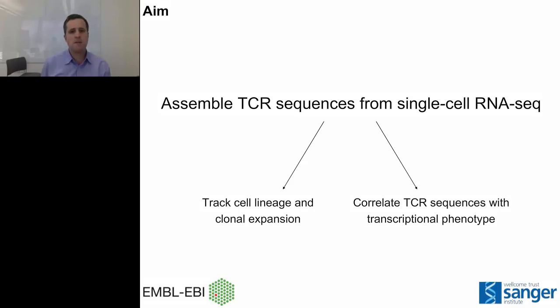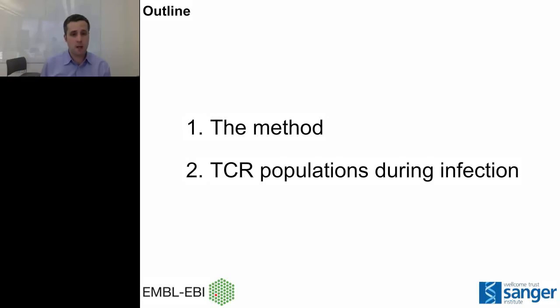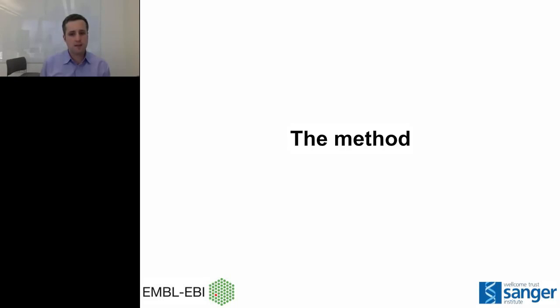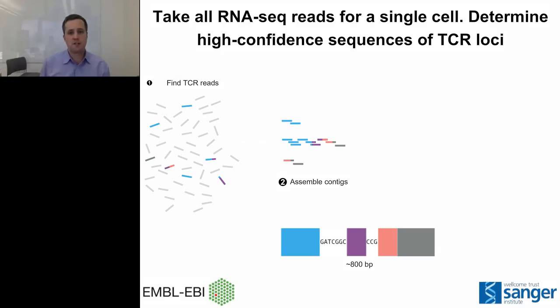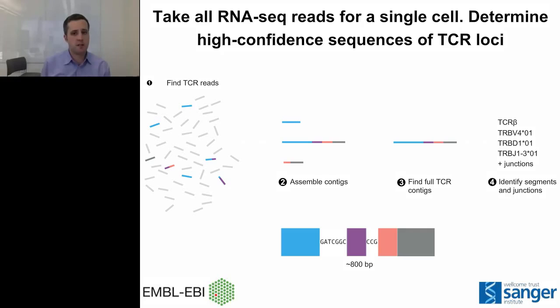The method starts with a pool of RNA sequences from each individual cell. We first find sequences that came from a recombined T cell receptor — either alpha or beta — then assemble them into contigs to generate the full-length T cell receptor sequence. We filter contigs to remove artifacts and truncated sequences, finding full-length high-confidence TCR contigs. We then analyze those contigs to determine the V, D, and J segments used and the junctional nucleotides, which tells us about the diversity present.